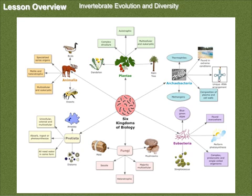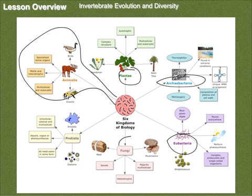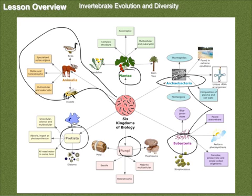This is the six kingdoms of biology. We are focusing for this section just on Animalia, but I want you to be aware that out of the kingdoms you have Plants, Archaea, Eubacteria, Fungi, and Protists. There's some controversy within the bacteria as to whether they should be one kingdom or not, but we're mainly going to be doing animals.